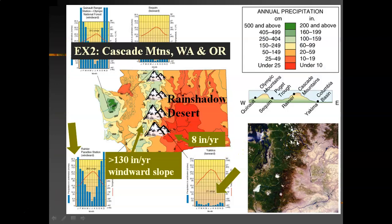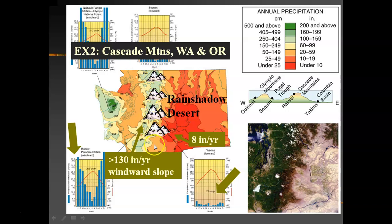The second example is another really high mountain range that dominates Washington state — and actually Oregon, the sister state just immediately to the south. The geography of both states is pretty much the same. Both are dominated by a very tall mountain range called the Cascade Mountains, which continue into Oregon. The conditions are exactly the same in both states.